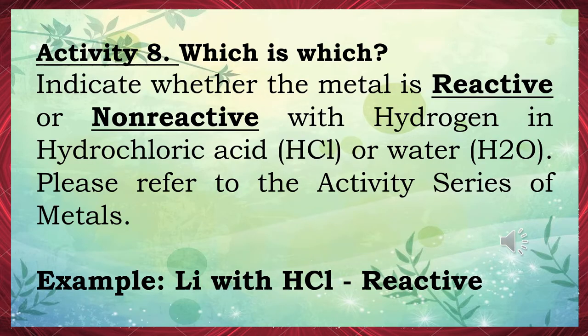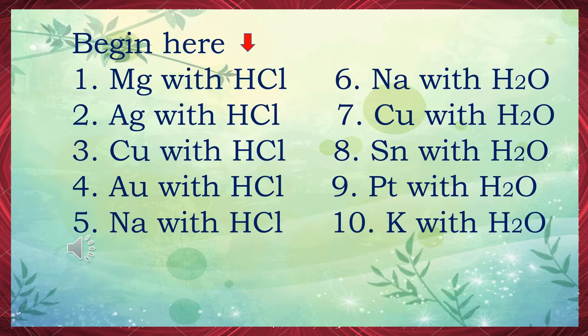Activity 8: Which is Which? Indicate whether the metal is reactive or non-reactive with hydrogen in hydrochloric acid (HCl) or water (H₂O), referring to the activity series of metals. Number 1: Mg with HCl — reactive. Number 2: Ag with HCl — non-reactive. Number 3: Cu with HCl — non-reactive. Number 4: Au with HCl — non-reactive. Number 5: Na with HCl — reactive. Number 6: Na with H₂O — reactive. Number 7: Cu with H₂O — non-reactive. Number 8: Sn with H₂O — non-reactive. Number 9: Pt with H₂O — non-reactive.